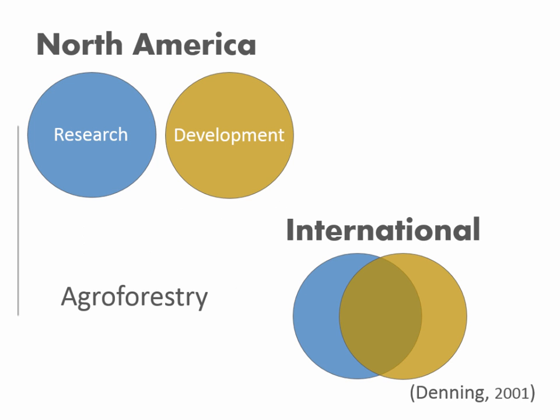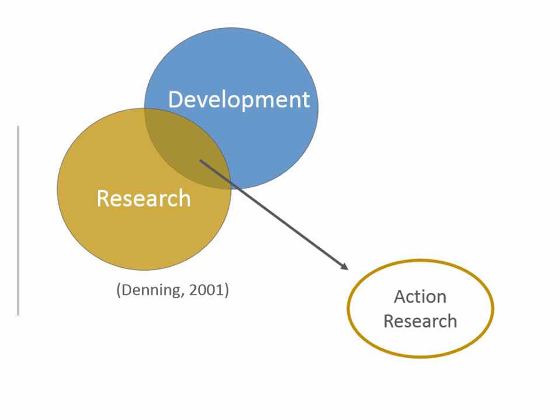A number of agroforesters have probably already found themselves having to develop community development skill sets when working with growers. In North America over the past 30 years, research and development have been somewhat separate, but in international agroforestry these two fields fuse together more. There's a lot of knowledge from international agroforestry we can apply to the North American context, and it's critical to choose a research approach that can handle these complexities.